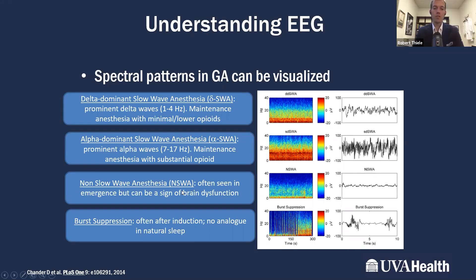Non-slow-wave anesthesia is different from delta and alpha-dominant slow-wave anesthesia. There's really no activity at low frequencies — no red on this compressed spectral array in this third image. And if you look at the raw waveform to the right of it, you see there's not a lot of EEG movement at all, not many squiggly lines at 5 hertz or 15 hertz.